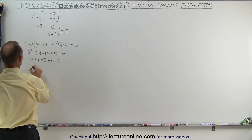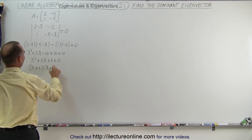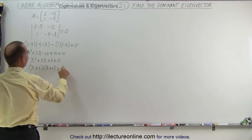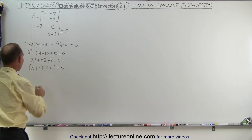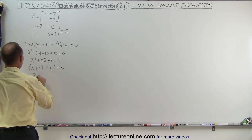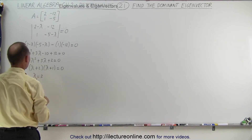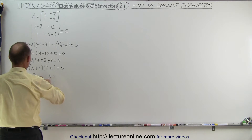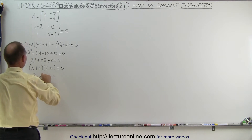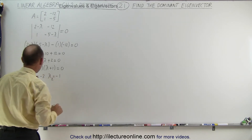Factoring gives us (lambda plus 2)(lambda plus 1) equals 0, and therefore the two eigenvalues are lambda₁ equals negative 2 and lambda₂ equals negative 1.